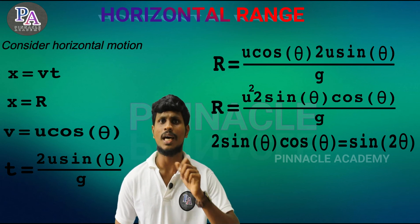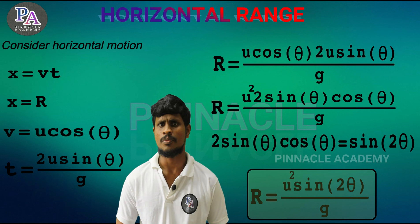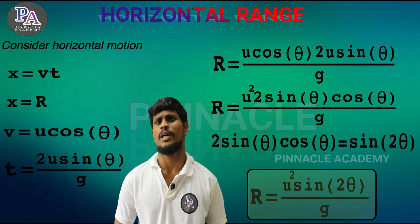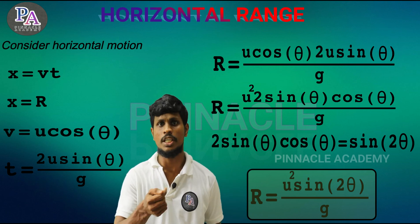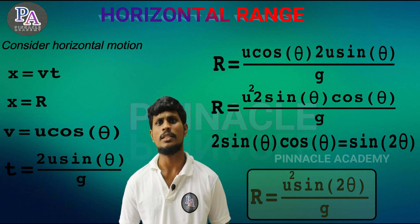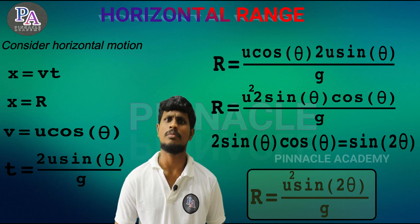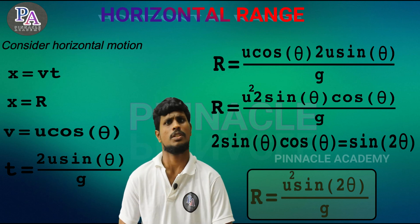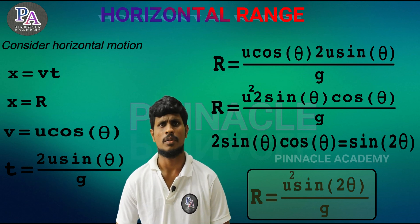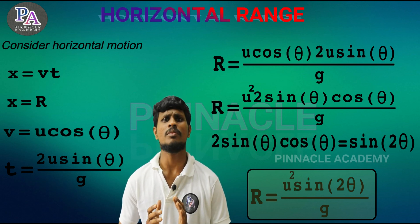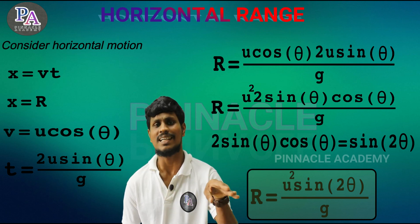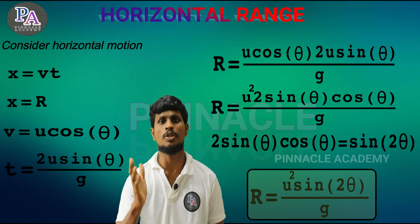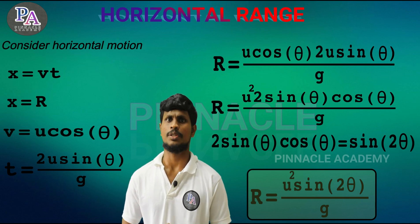The equation is r is equal to u squared sin2θ divided by g. This is the equation of maximum horizontal displacement — that is the equation of the range.